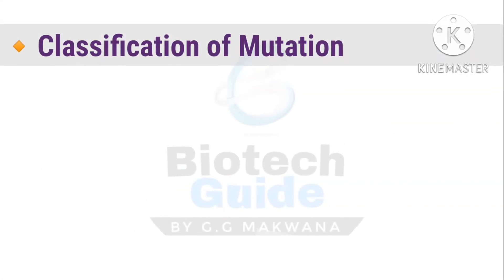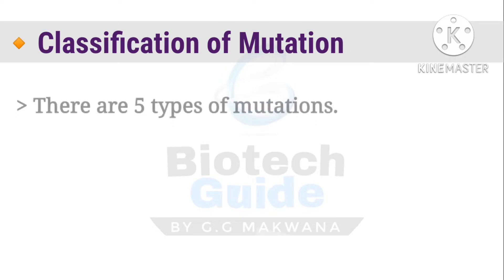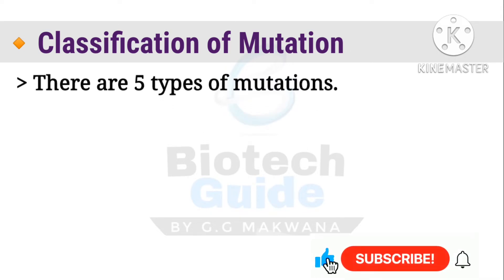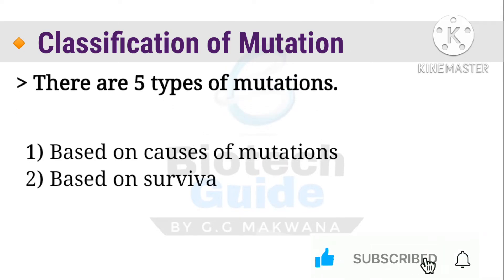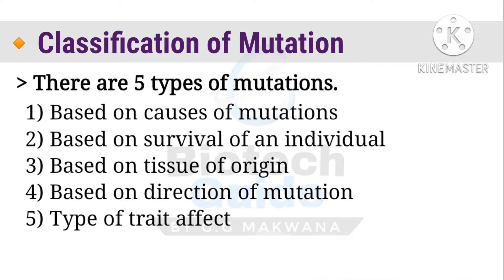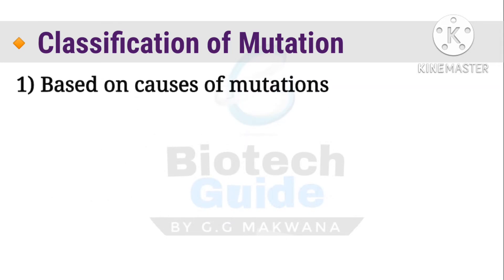Now we will discuss the classification of mutation. There are mainly five classifications: first, based on causes of mutation; second, based on survival of an individual; third, based on tissue of origin; fourth, based on direction of mutation; and fifth, based on type of trait affected. Let us get an overview of all these classifications.